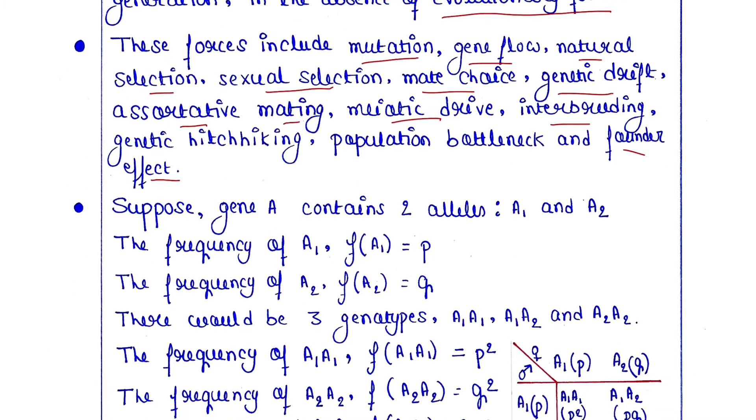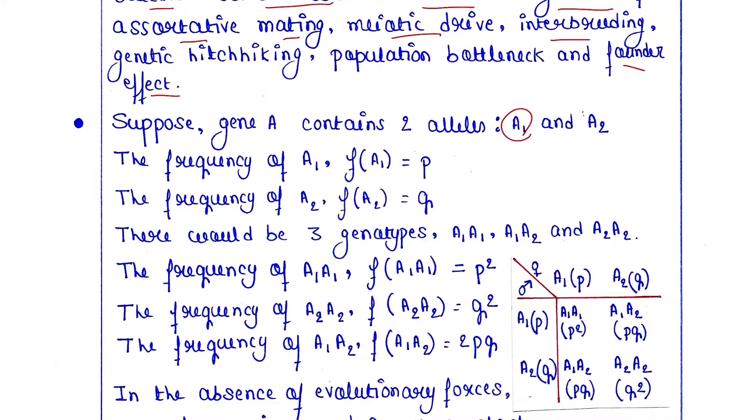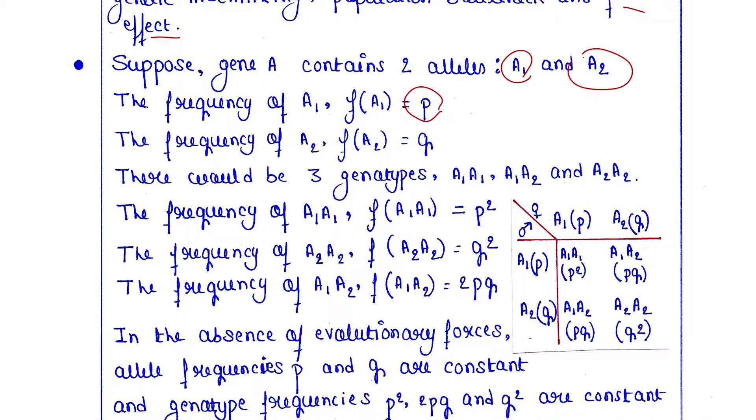Suppose gene A contains two alleles, A₁ and A₂. The frequency of A₁ is P, and the frequency of A₂ is Q.